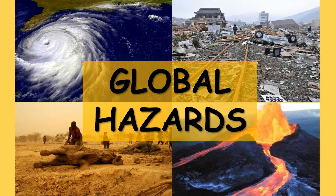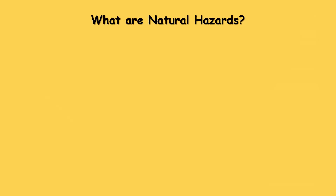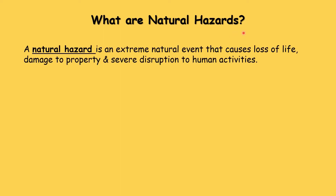Global hazards are hazards that are found all over the world. Natural just means something that is because of Mother Nature — nothing to do with humans, it would occur anyway. Hazards are things that are dangerous for people or could cause loss of life. Hazards are an extreme natural event that causes loss of life, damage to property, and severe disruption to human activities. Examples include earthquakes, volcanoes, tropical storms, drought, lightning, or even a heat wave — anything that is natural and can harm people.